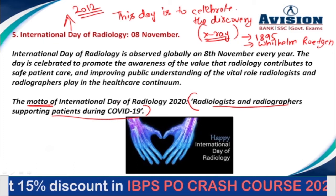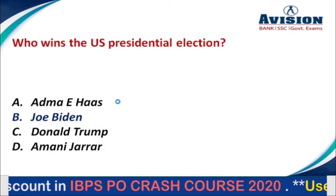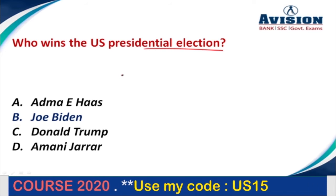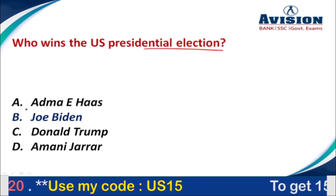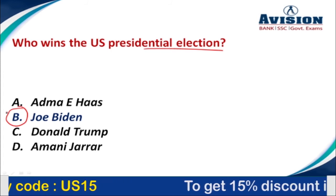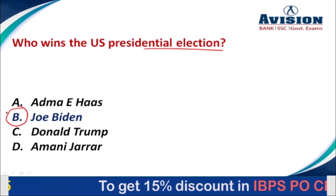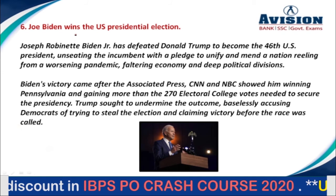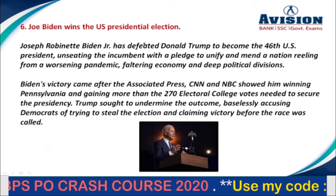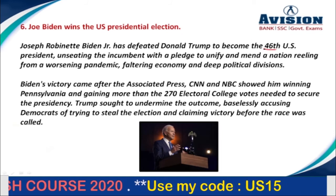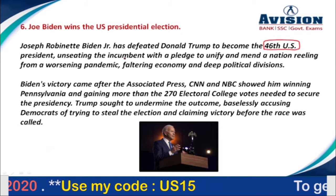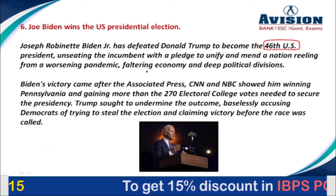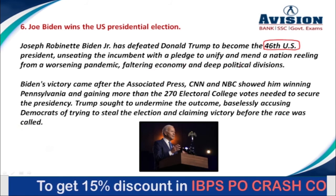Question number 6: Who won the US presidential election? Options are Adma Sihas, Joe Biden, Donald Trump, or Amani Jarar. The correct option is option B, that is Joe Biden. Joseph Robinette Biden Jr. has defeated Donald Trump to become the 46th US president, unseating the incumbent with a pledge to unify and mend the nation reeling from a worsening pandemic, a faltering economy, and deep political divisions.